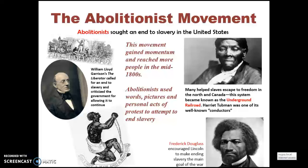During this time period, the abolitionist movement sought to end slavery in the United States altogether. This movement gained momentum in the mid-1800s. Abolitionists used words, pictures, and personal acts of protest to attempt to end slavery. William Lloyd Garrison's publication The Liberator called for an end to slavery and criticized the government for allowing it to continue. Harriet Tubman helped many slaves escape to freedom in the north and Canada through a system known as the Underground Railroad. Frederick Douglass encouraged Lincoln to make ending slavery the main goal of the war.